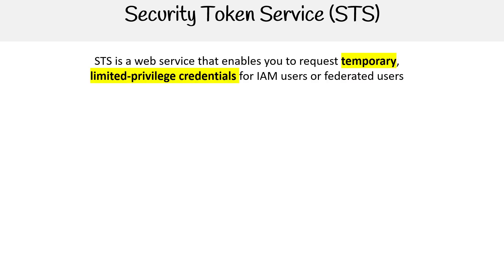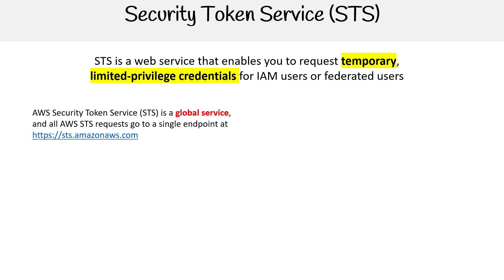Security Token Service, also known as STS, is a web service that enables you to request temporary, limited-privilege credentials for IAM users or federated users. STS is a global service and all STS requests go to a single endpoint at sts.amazonaws.com. You can use the following API actions to obtain STS.